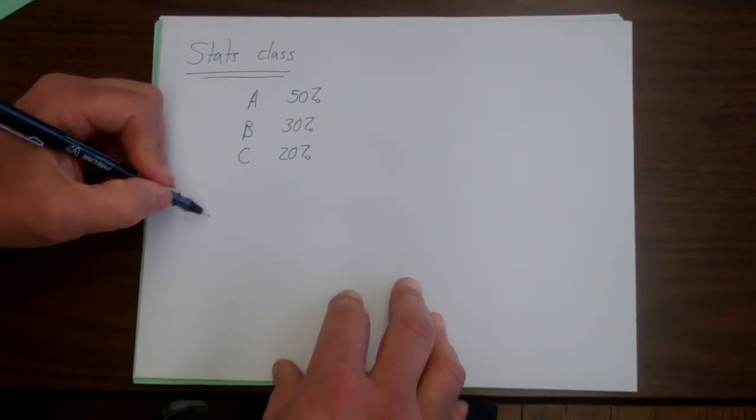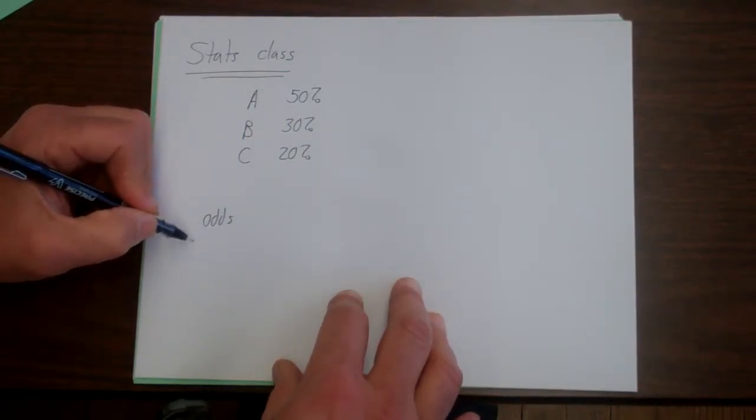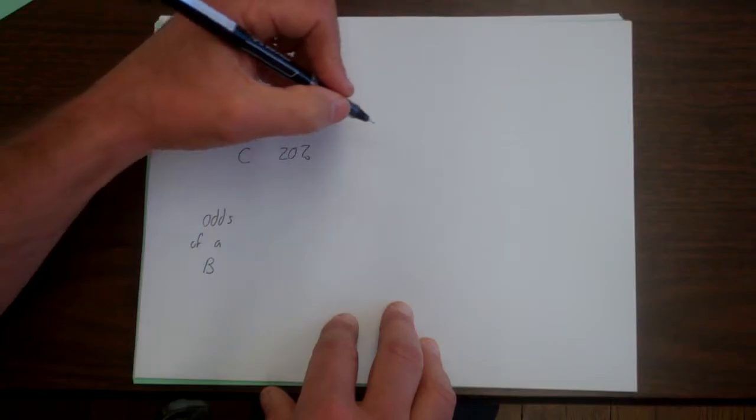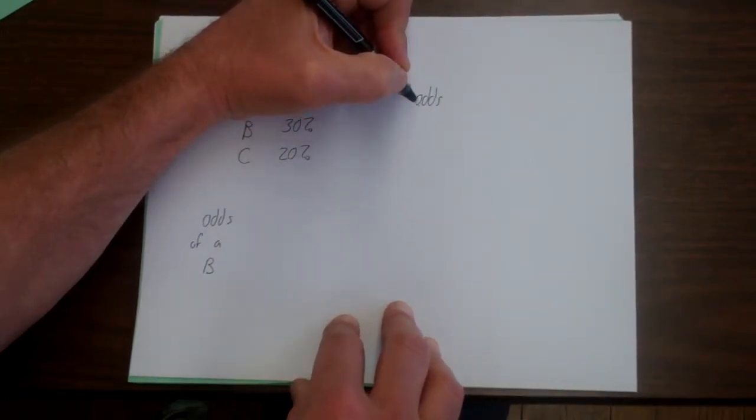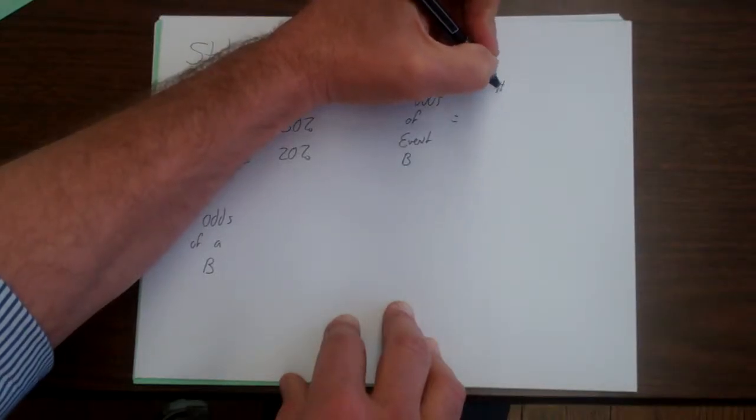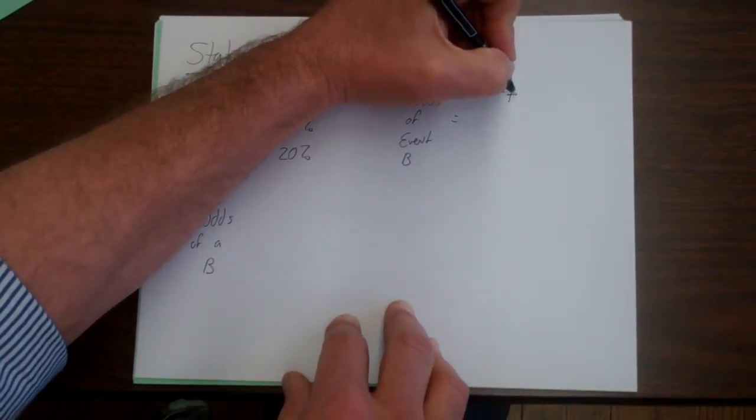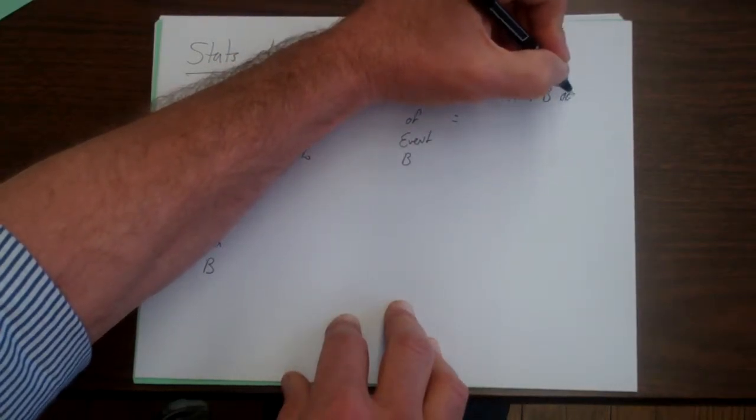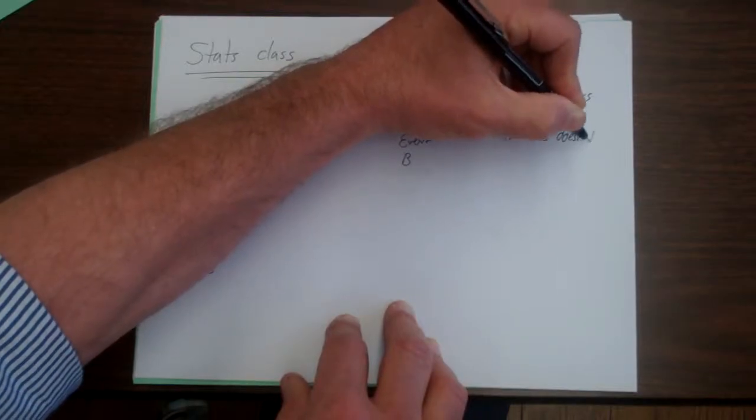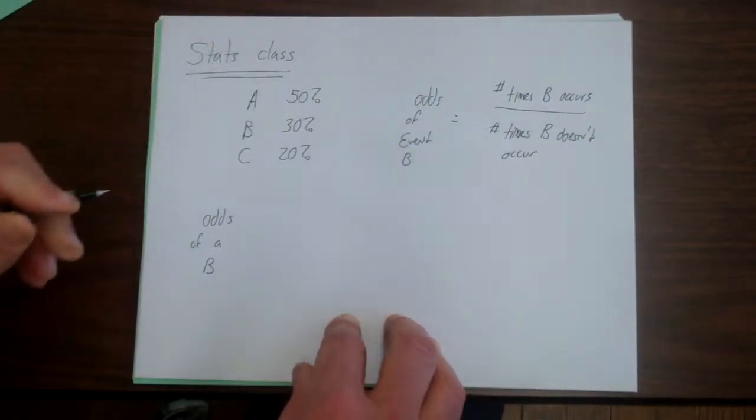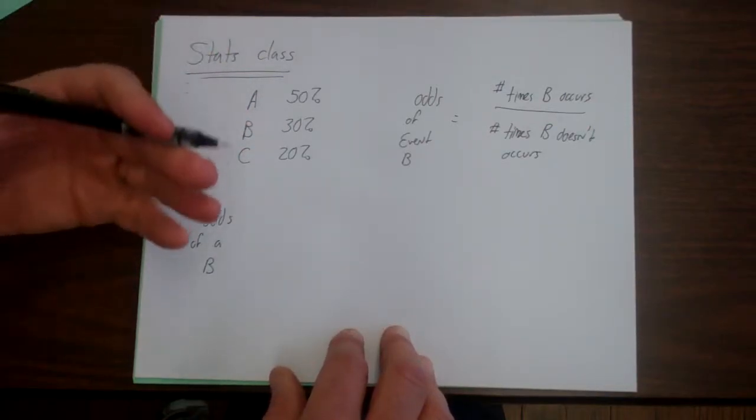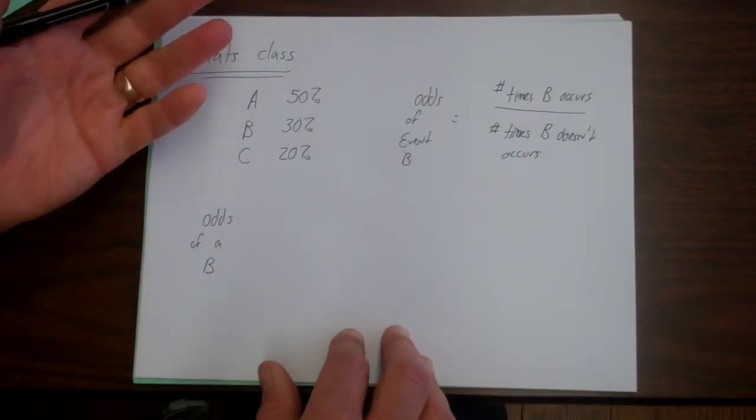And then the question is, what's the odds of getting a B? Well, the odds of an event, the odds is just a fraction. The odds of event B is simply the number of times B occurs over the number of times B doesn't occur. So it's very similar to the idea of probability, but it's not exactly the same. Now here's the key, and why we have odds and probability both is simply a matter of when people talk. Sometimes they talk about probability, sometimes they talk about odds.